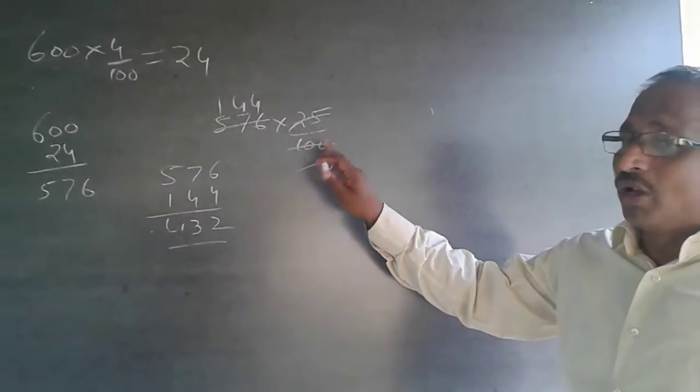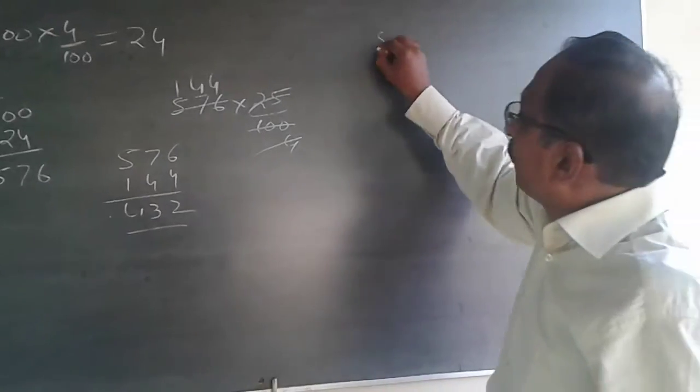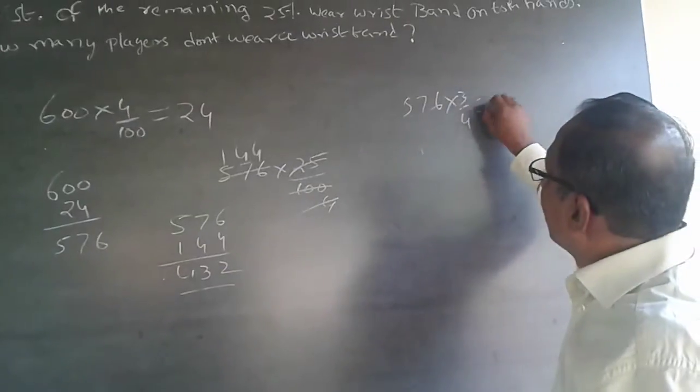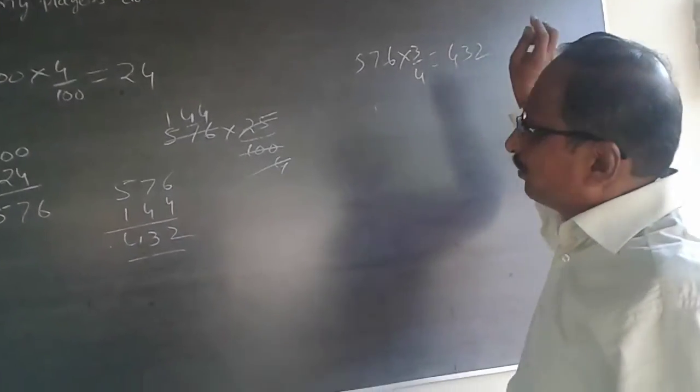So 25 is nothing but 1 by 4. So 3 fourths are not wearing. 576 into 3 by 4 is the answer. 576 into 3 by 4. 4 will be 432. As simple as this.